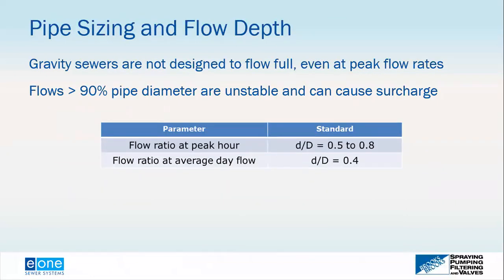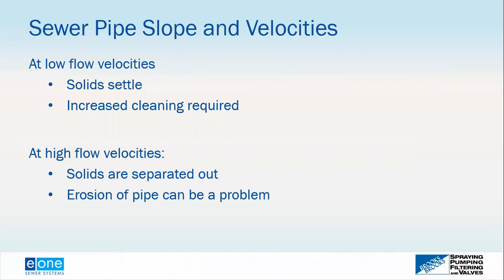For gravity sewer system design, the pipe slope is set to maintain proper velocities. At low velocities, solids settle out, increasing cleaning requirements and causing hydrogen sulfide generation — that rotten egg odor you smell from manholes. At high velocities, wastewater moves faster than solids, still causing separation, and the higher flow forces can cause erosion and wear on the pipe or create hydraulic concerns at bends. The standard design targets a minimum velocity of 0.6 meters per second and a maximum velocity of 3.0 meters per second.